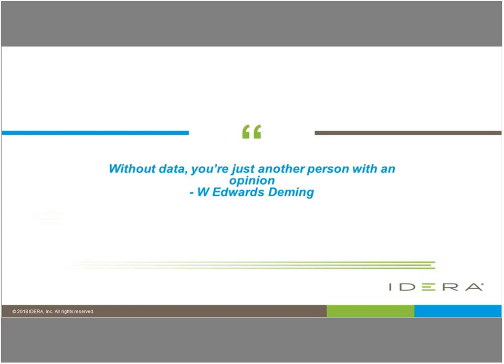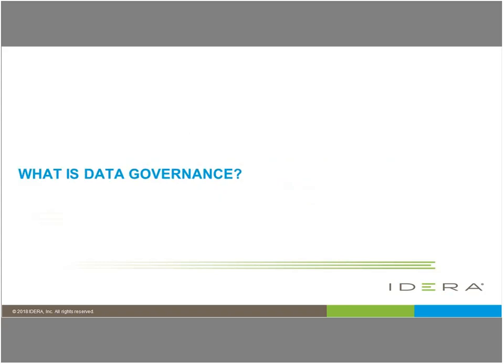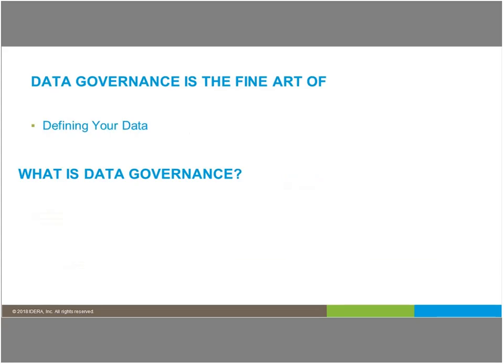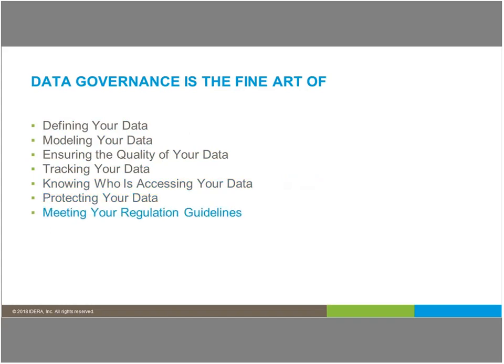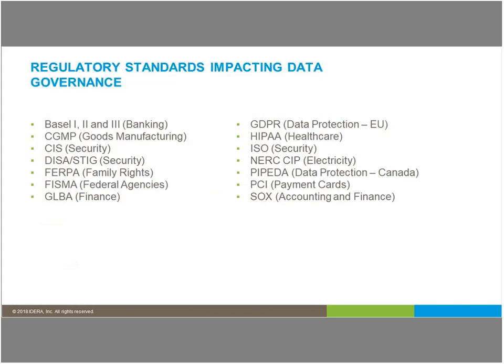And without data, you're just another person with an opinion. So what is data governance? Data governance is the fine art of defining your data, modeling your data, ensuring the quality of your data, tracking your data, knowing who is accessing your data, protecting your data, and meeting your regulatory guidelines. Here are a few of the standard regulatory guidelines that a lot of people are looking at — there are security-oriented regulatory standards and other standards your organization might be held accountable to. It's very important to look at what those standards are asking you to do in regards to your data governance process.